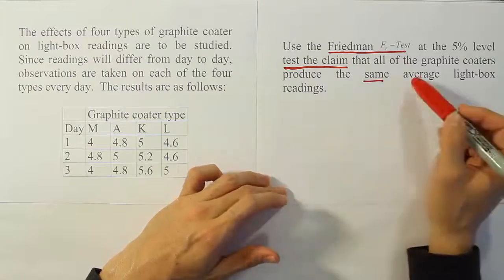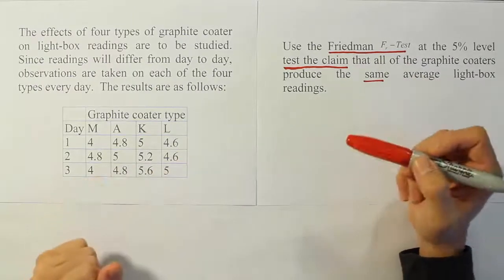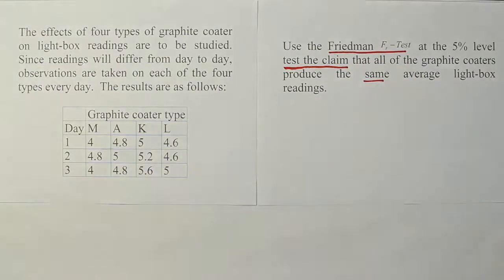Now, of course, the problem originally would have said average because of the randomized block design nature of it, but the Friedman FR test, of course, talks about the median, not the average. So we'll use median as a measure of our center in this case, not the average.